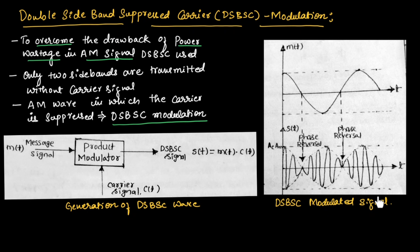This is the DSBSC modulated signal. As you can see, we are having a message signal, and using a carrier signal, the product modulator will produce a DSBSC signal as shown in this figure. As you can observe here, the carrier wave is suppressed and only two sidebands are transmitted. This is the DSBSC waveform.